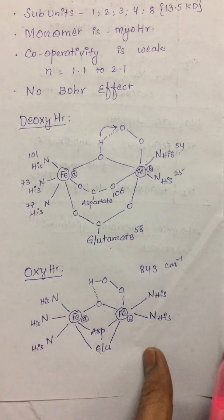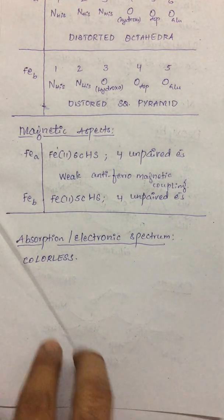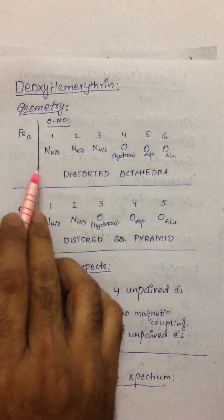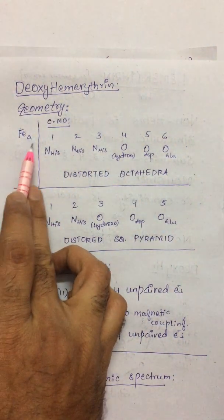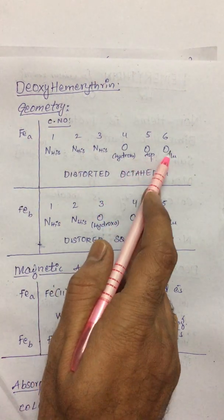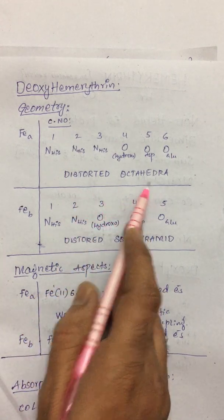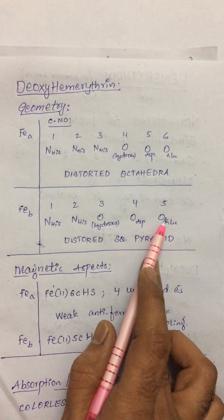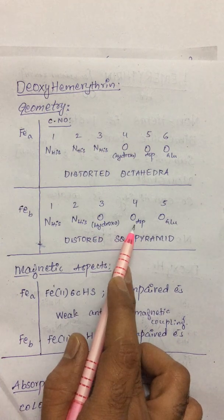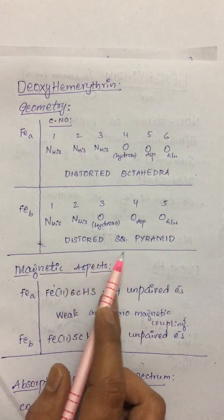Reviewing the geometrical aspects of deoxyhemerythrin: iron A has coordination number six — three are nitrogen from histidines, one is oxygen from the hydroxyl bridge, and the fifth and sixth are oxygens from aspartate and glutamate — giving a distorted octahedral geometry. Iron B has coordination number five — two are nitrogen from histidines, one is oxygen from the hydroxyl bridge, and the fourth and fifth are oxygens from aspartate and glutamate — giving a roughly distorted square pyramidal geometry.